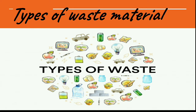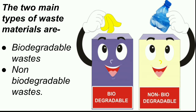Today we will learn about the different types of waste materials. Basically, there are two main types of waste materials: the first is biodegradable waste, and the second is non-biodegradable waste.